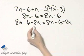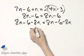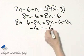Watch what happens. 8n minus 8n, that's 0, so I have negative 6 is equal to negative 6.